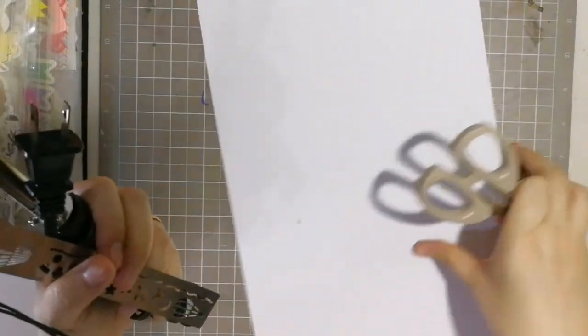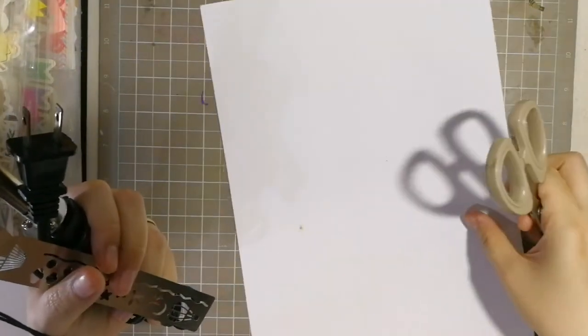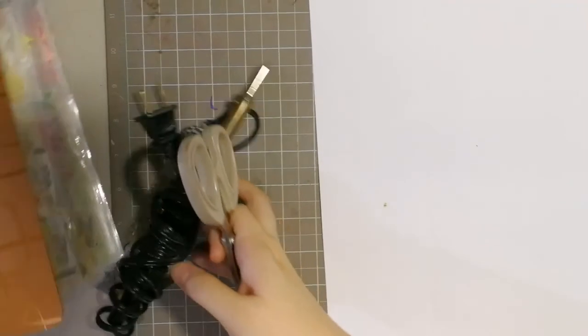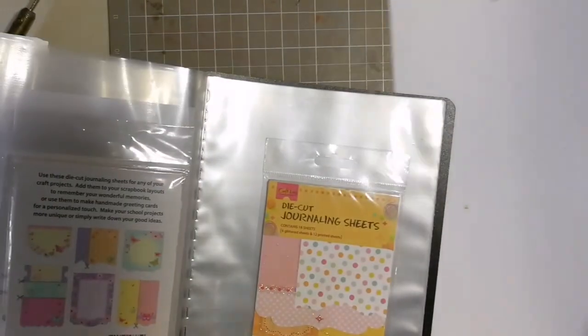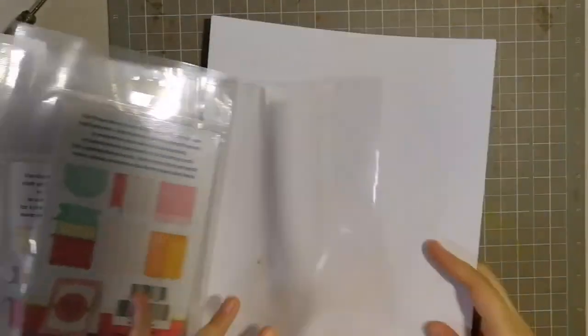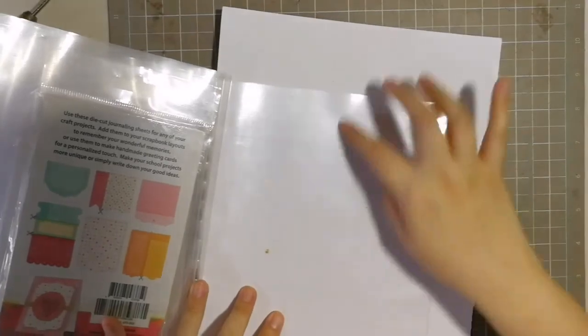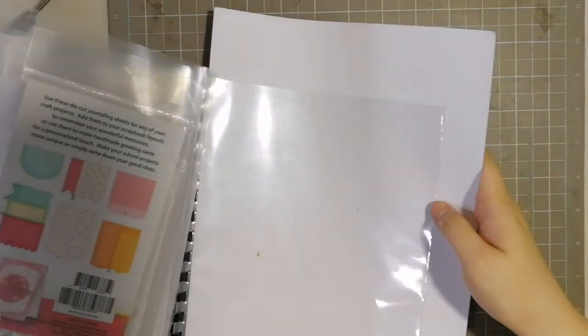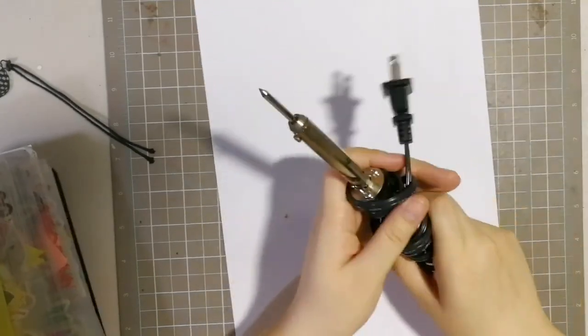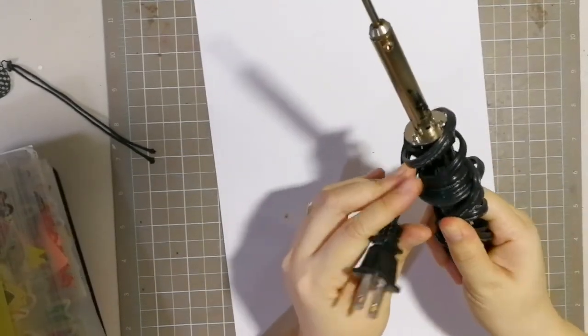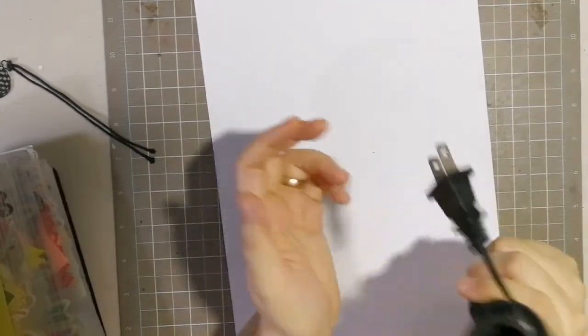You'll need thick paper to serve as something that you could put under the sheet while you're melting the plastic. This is 200 GSM paper which I find really works well.